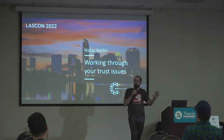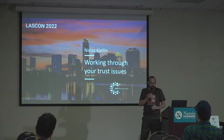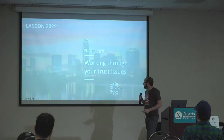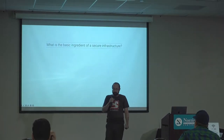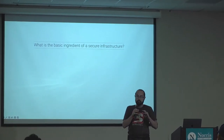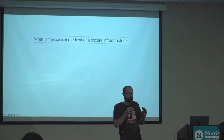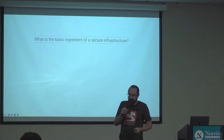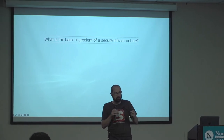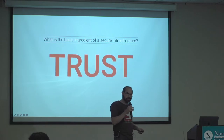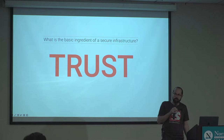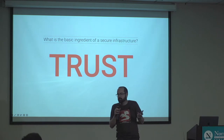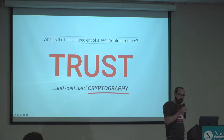We're going to look at PKI and lift it up into the application layer, taking responsibility and using that to secure our applications. I'll start with a question: what do you think is the basic concept you need in order to create a secure infrastructure? Encryption is good — that's a tool we'll use — but I'm looking for more of a concept. Trust is the right answer, because if we put in any encryption or security controls without trust, the entities can't really talk to each other securely.